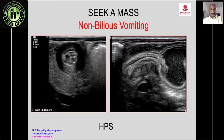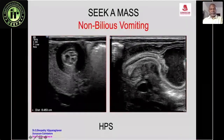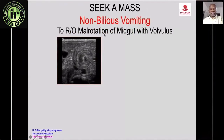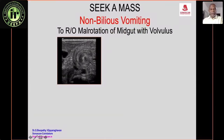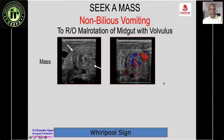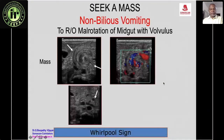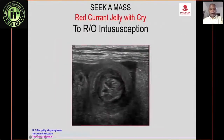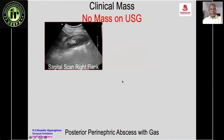Clinical context guides targeted scanning: non-bilious vomiting requires looking for hypertrophic pyloric stenosis; bilious vomiting requires looking for volvulus — the whirlpool sign of malrotation and volvulus. Red-currant jelly stool with crying should raise suspicion of intussusception.